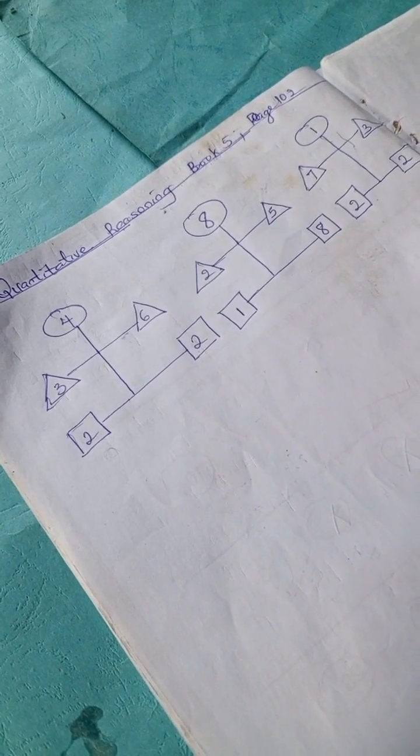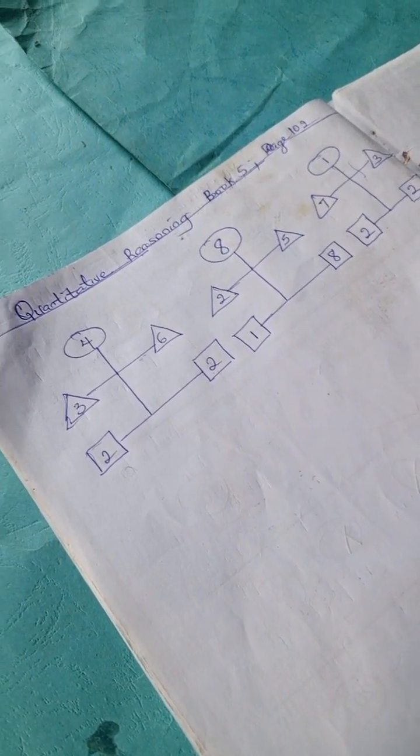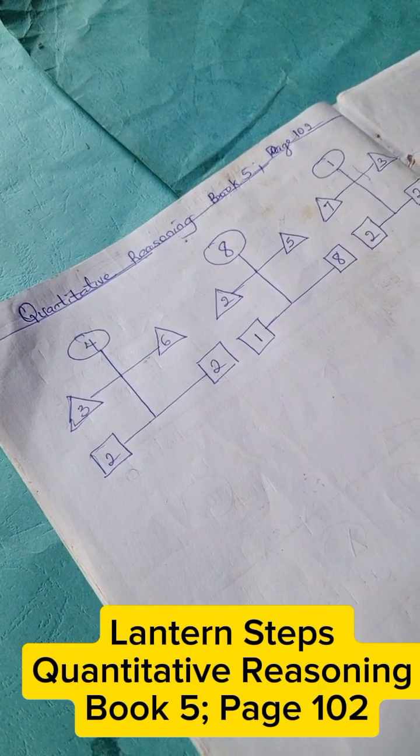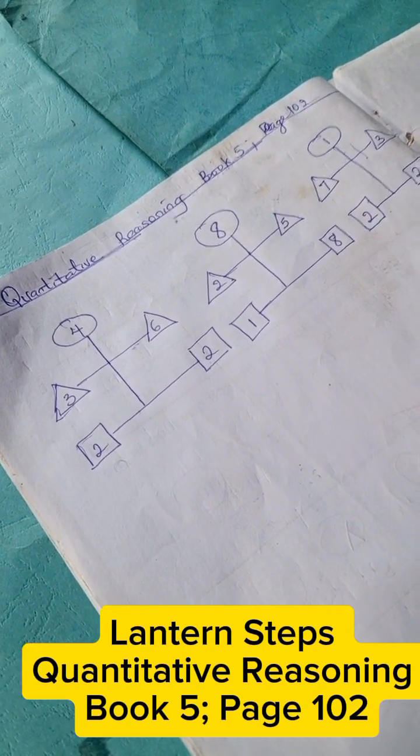Welcome to Quantitative Reasoning solution section. Today we have quantitative reasoning from Lantern Steps Book 5, Page 102.